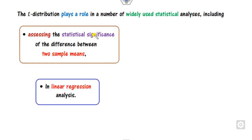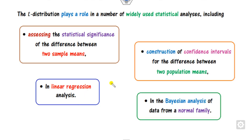The T-distribution plays a wider role in statistical analysis. It can be used to compute the statistical difference between two sample means, in linear regression models, to compute the confidence interval of population means, and also in Bayesian analysis.